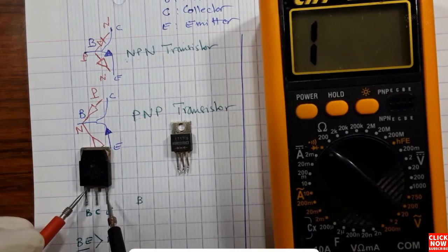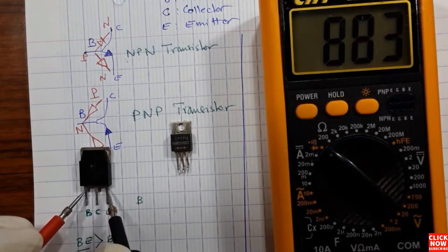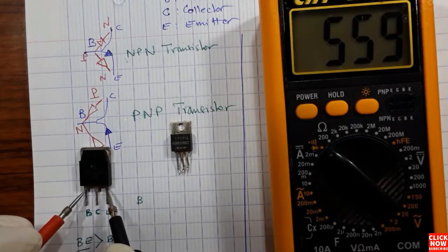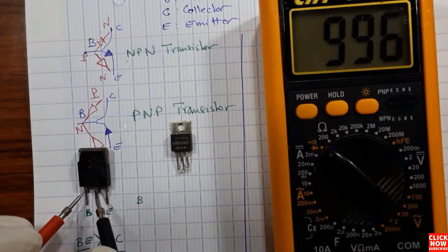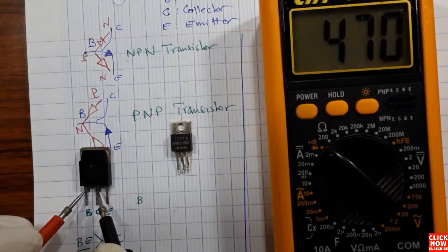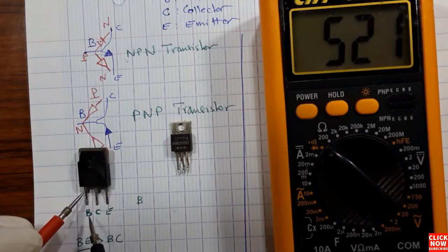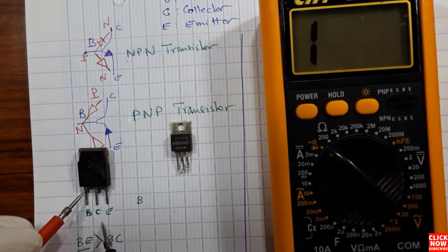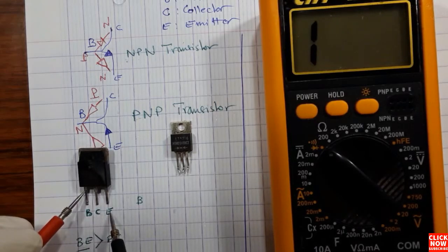Let's confirm this for the transistor again. Between base and emitter we have 559, and between base and collector we have 458, as you can see. So the base-emitter value is greater than the base-collector value.